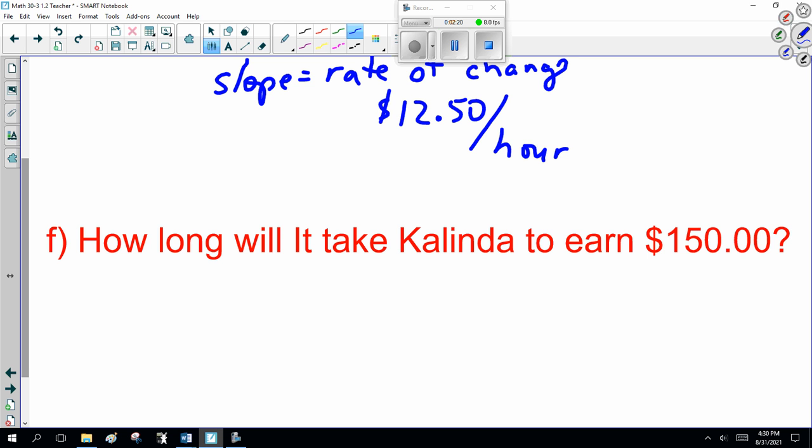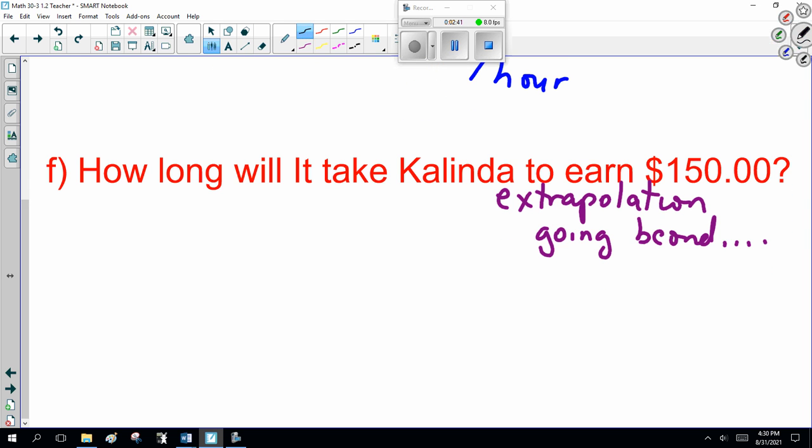Now how long does it take Kalinda to earn $150? This is the extrapolation, going beyond. Now the long way to do this is slope. So the rate of change is rise over run. When we did these calculations last class, the slope is $12.50. Rise, how much is she going to earn? Well $150. The run is time, or sorry I should call that X. We don't know what the time is so we call it X.